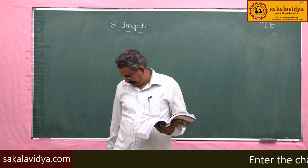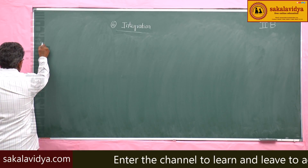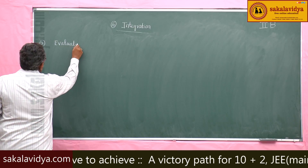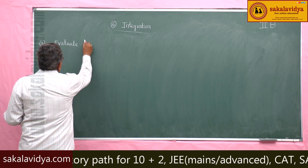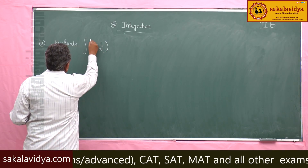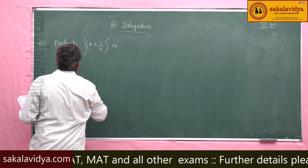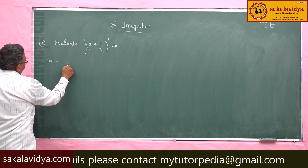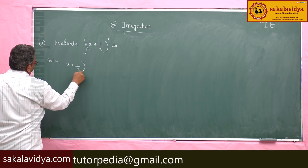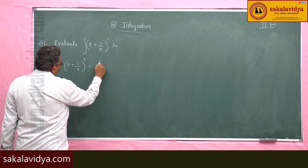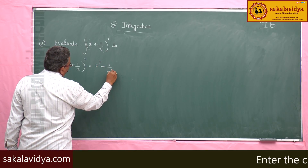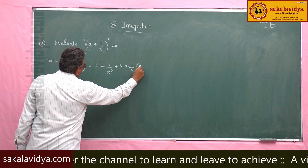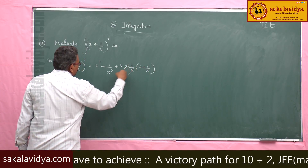Fifth problem: evaluate integral of (x + 1/x)³ dx. Now (x + 1/x)³ = x³ + 1/x³ + 3·x·(1/x)·(x + 1/x), which equals x³ + 1/x³ + 3x + 3/x.